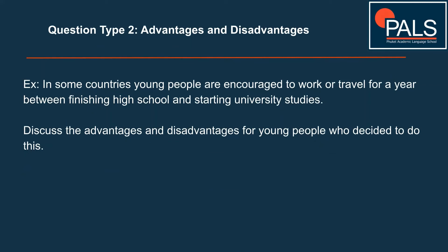Question type two: advantages and disadvantages. I think these are some of the easiest ones you can get in IELTS writing task 2 — you just have to give the positives and negatives of something. Example: 'In some countries, young people are encouraged to work or travel for a year between finishing high school and starting university studies. Discuss the advantages and disadvantages for young people who decide to do this.' You've got a statement, and you have to discuss the good and bad points. Structure your answer sensibly: body one — your advantages; body two — your disadvantages. Keep it as simple as possible.